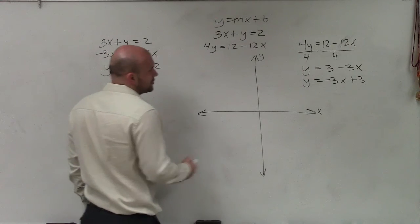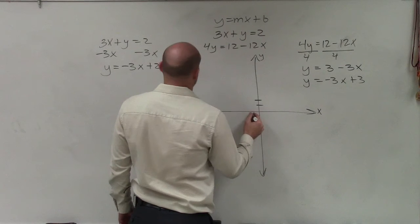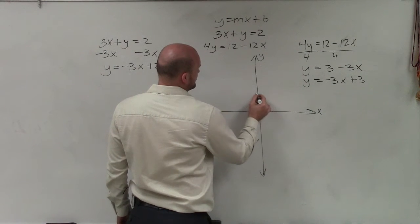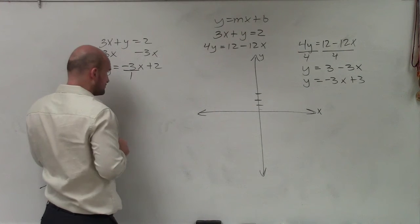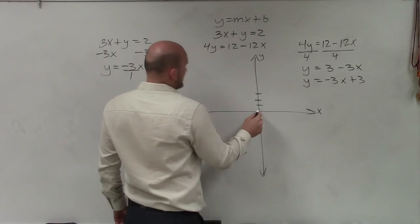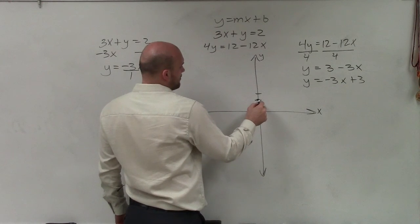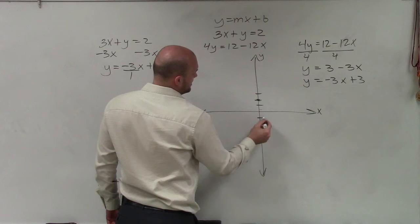But let's just go ahead and graph them real quick. Here we intersect at positive 2, 1, 2. And here we intersect at positive 3, 1, 2, 3. So to graph this one, we want to apply the slope, which is negative 3 over 1. So I go up 2, 1, 2. That's my y-intercept. Then I follow the slope, which is negative 3, 1, 2, 3 over 1.